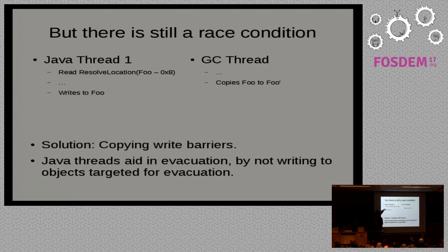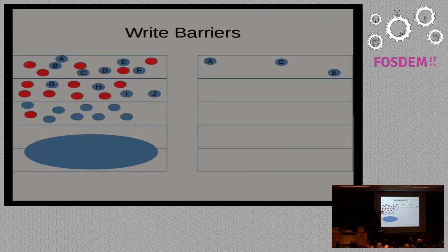There's still a race condition: one thread resolves the forwarding pointer and then stalls and writes to Foo, while another thread copies Foo. So we also have a more complicated write barrier. We have a write barrier that copies the object first before you're allowed to write to it. So if I want to write to D, I have to first copy it over to two-space and then write to it there. This isn't that painful — there are other concurrent collectors that have to copy things on read. We only copy on writes, and writes are less frequent than reads.